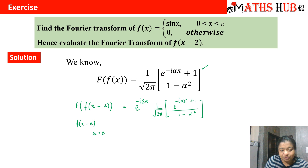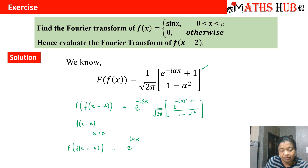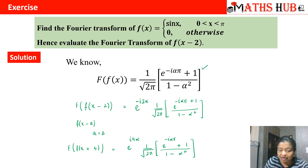If the question asks for the Fourier transform of f(x + 4), then a = −4. The minus sign converts to a plus, so you multiply by e^(+i · 4α) along with the Fourier transform. The result becomes (e^(−iαπ) + 1) / (1 − α²) multiplied by e^(+i · 4α). This is how we calculate questions on the shifting property.